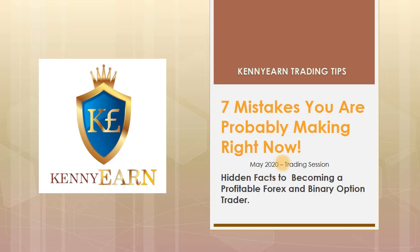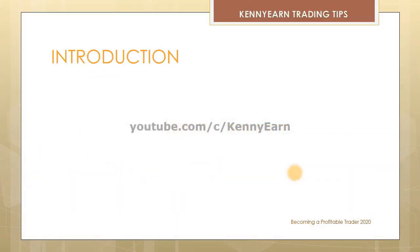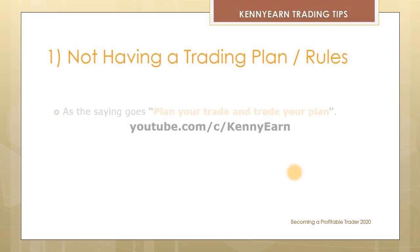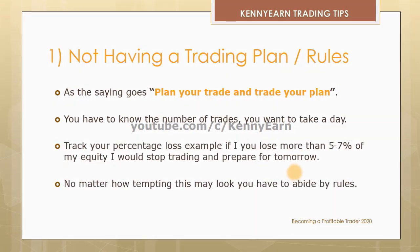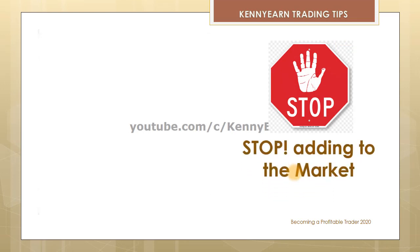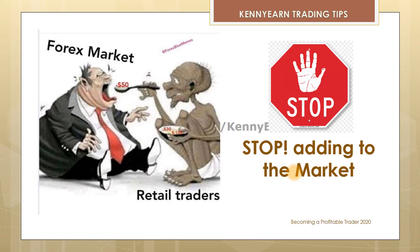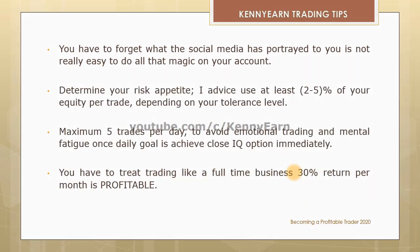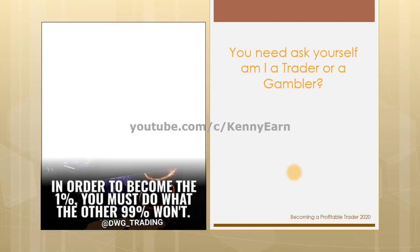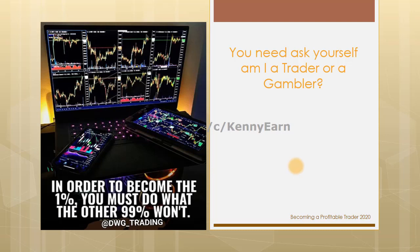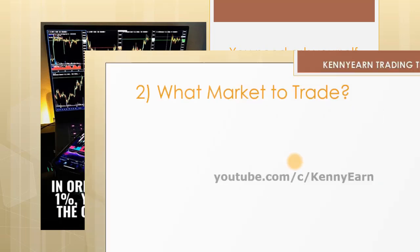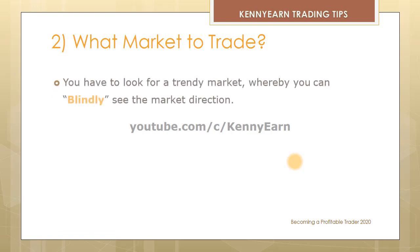I'll do a quick rundown of part one. I talked about having a trading plan - as a trader you have to plan your trades and trade your plan. You have to stop overtrading, know how many trades you want to take, and what percentage of your account you're willing to lose. I also asked: are you a trader or a gambler? A trader looks for consistency and a gambler looks for quick profit.